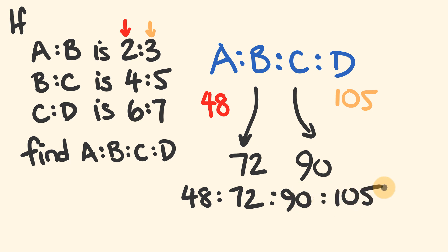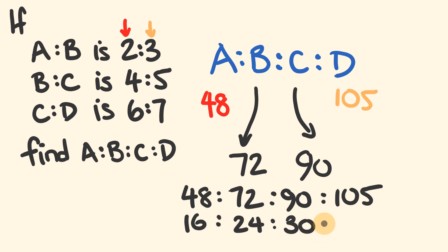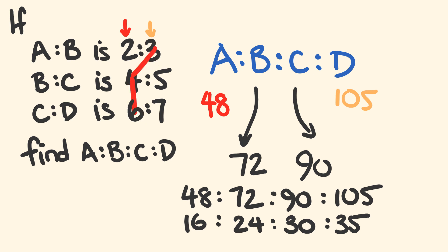You can see that this actually has a common factor — 3 goes into all of these — and we get 16 is to 24 is to 30 is to 35. That's nice and easy. Just remember the pattern: the first value a and the last value d are straightforward. For b, remember it's b times b times c, and for c it's b times c times c.